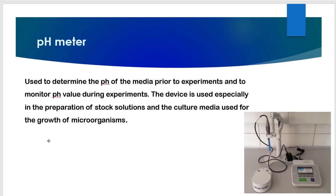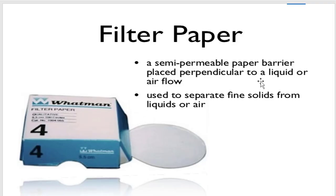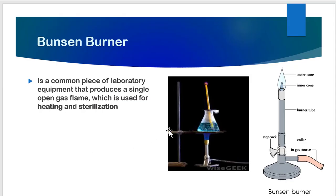Next we have the pH meter. With this equipment we measure the pH of a solution to determine whether it is acidic or basic. This is an electrode-based pH meter and it gives a digital reading — very useful in any microbiology laboratory. We also have filter paper, which is a semi-permeable paper barrier placed perpendicular to a liquid or airflow, used to separate fine solids from liquid or air. We also have the Bunsen burner, a common piece of laboratory equipment that produces a single open gas flame used for heating and sterilization. We keep the Bunsen burner inside the laminar flow hood to sterilize our environment and our inoculating needles and spreaders.